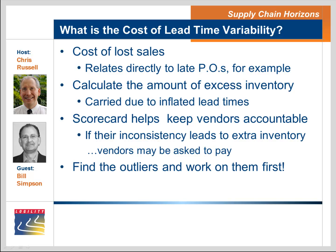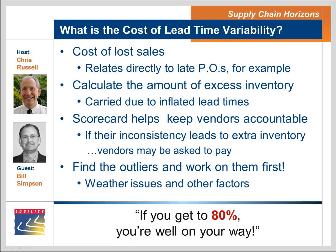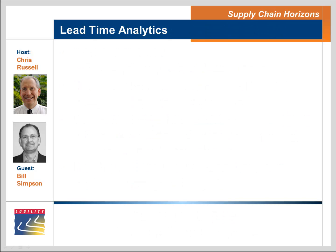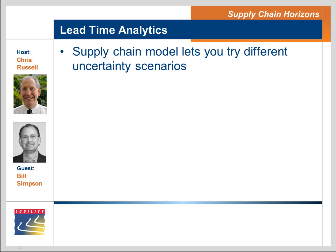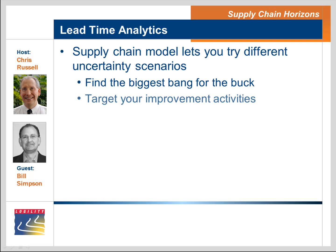There are always going to be outliers. Unless you can get to the Walmart model where you hold your vendors completely accountable, it's going to happen — weather issues, shutdown issues — so you're not going to get 100% accuracy on lead times, but if you can get to 80%, you're well on your way. One of the things we can do with some of the tools is, when you have that supply chain modeled, you can play with the dials and compare the uncertainty in cycle time, inventory level, and customer service, and essentially plot curves across the supply chain to identify where the biggest bang for the buck is, so you can start targeting your improvement activities. Analytics becomes a very important part of this lead time challenge.